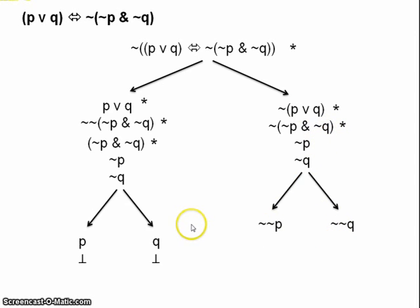Which, of course, by double negation gives us P and Q, which, of course, contradict the not P and not Q up here.